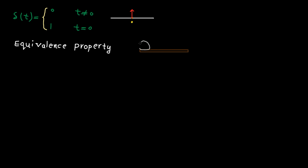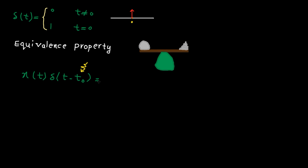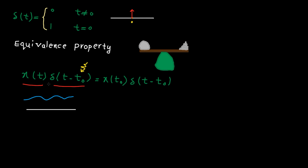The first one is the equivalence property. Based on this property, x of t multiplied by a delta function shifted by t0 is equal to the value of x at t0 multiplied by the same delta function. Let's understand the meaning of this property. Let's assume x of t is some function, and this is the delta function shifted by t0. The delta function is 0 everywhere except at t0.